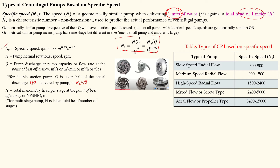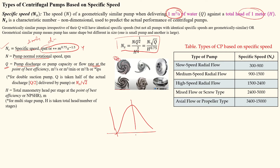NS represents specific speed, expressed in two ways: dimensionless form and dimensional form. N is the pump's normal rotation speed — the impeller rotation speed. Q is the discharge at the best efficiency point — the point where maximum efficiency occurs.